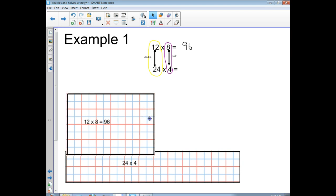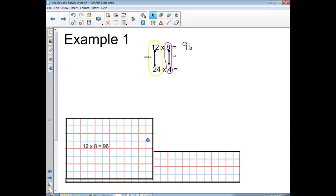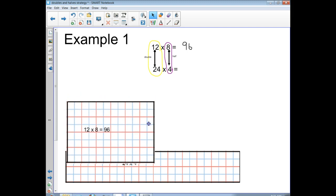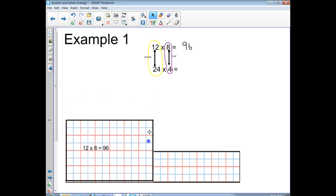Now I'm going to bring up my 24 times 4. So watch what happens when I overlay my 12 times 8 over my 24 times 4. So I'm going to lay it over top, and then I'm going to get my highlighter and we're going to look at the part.